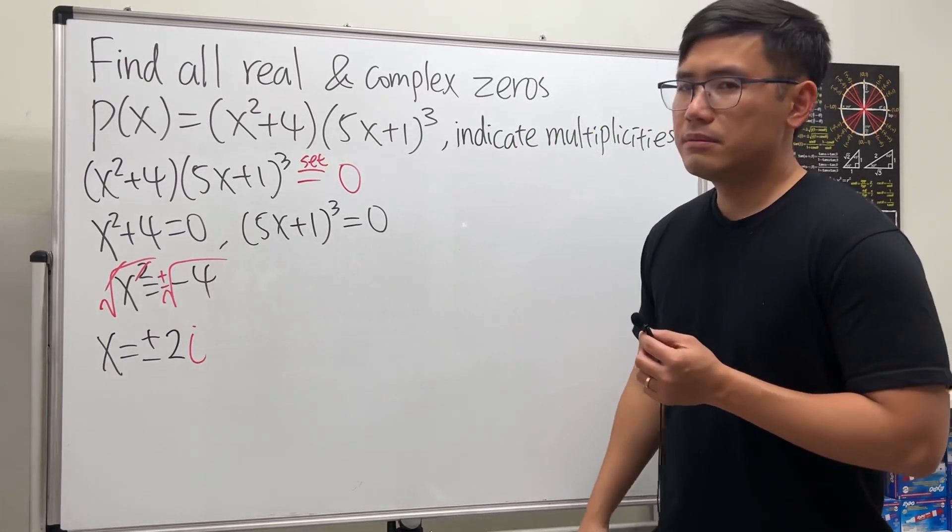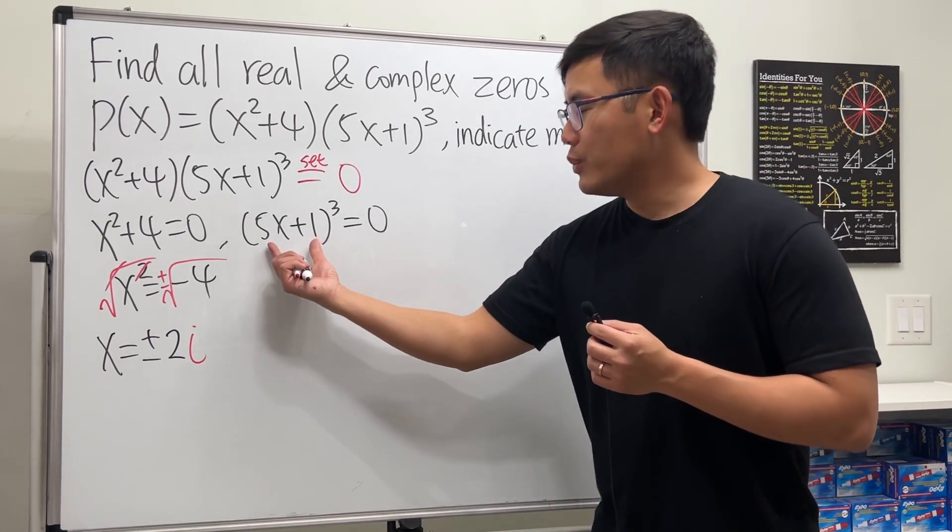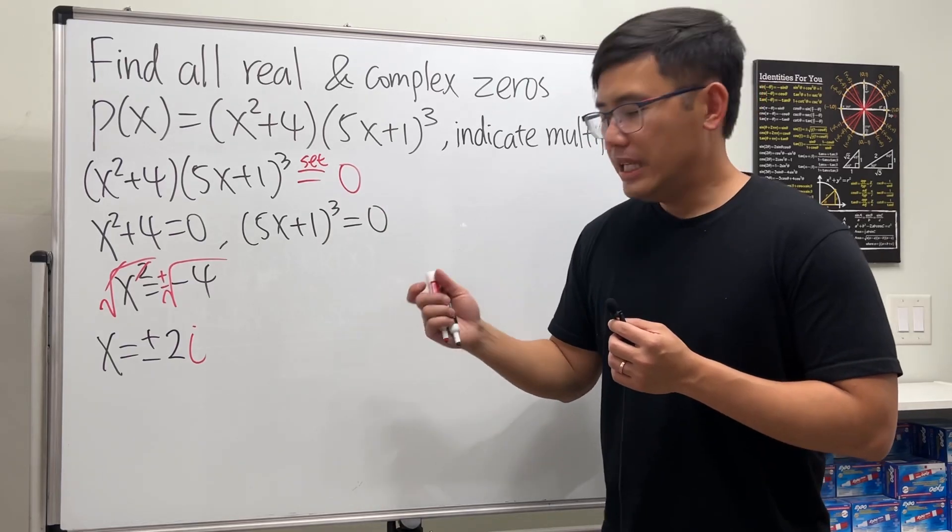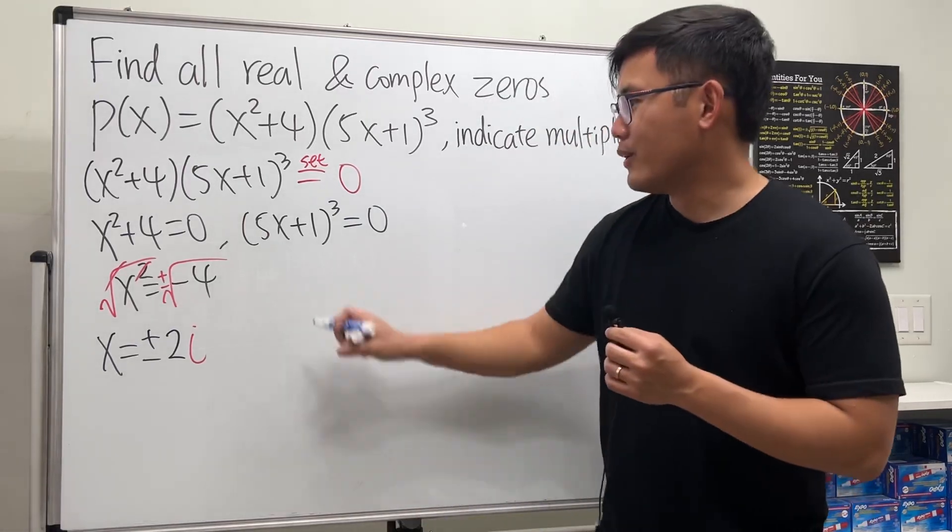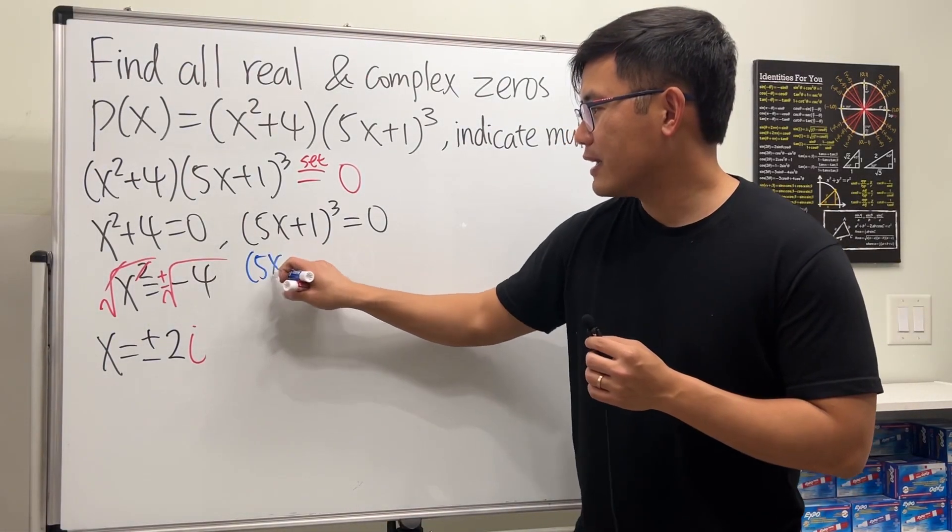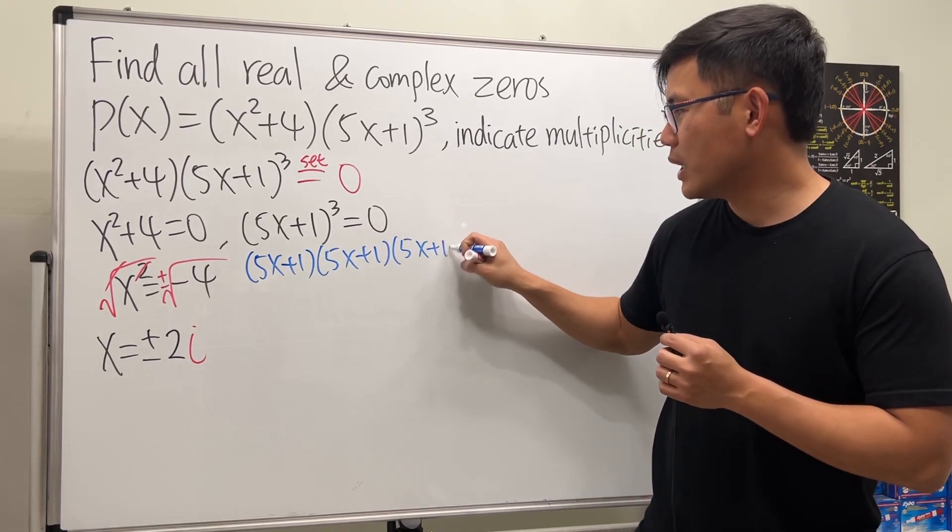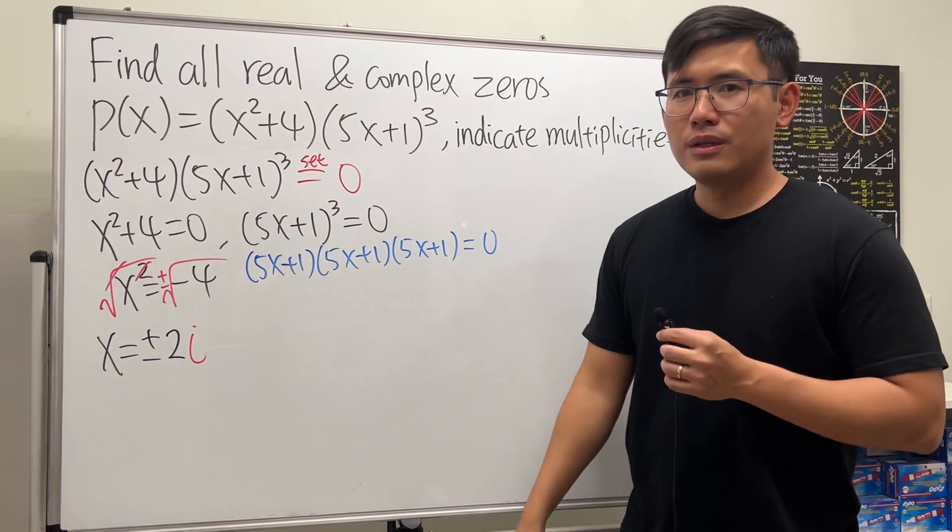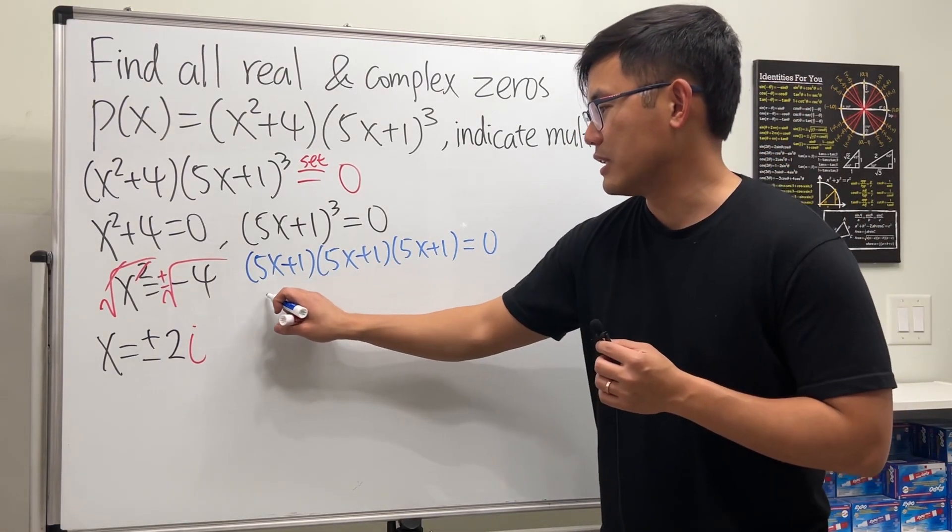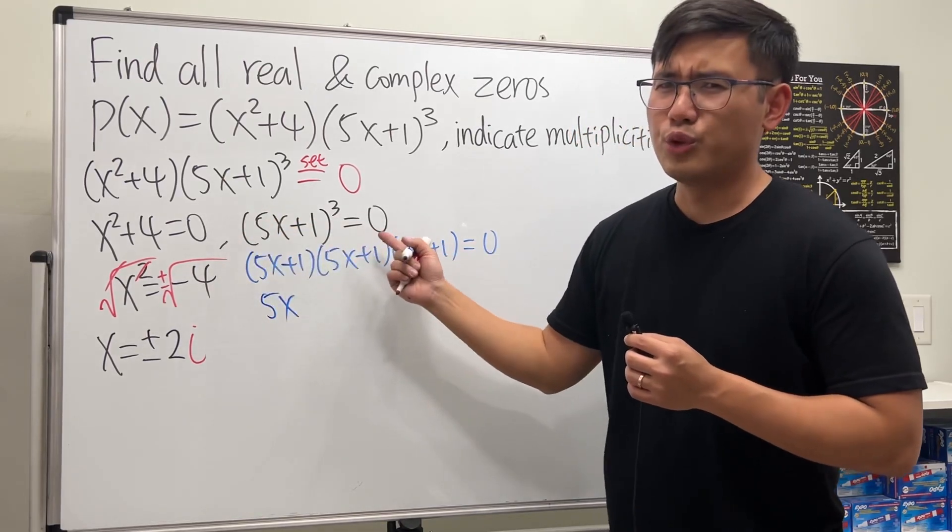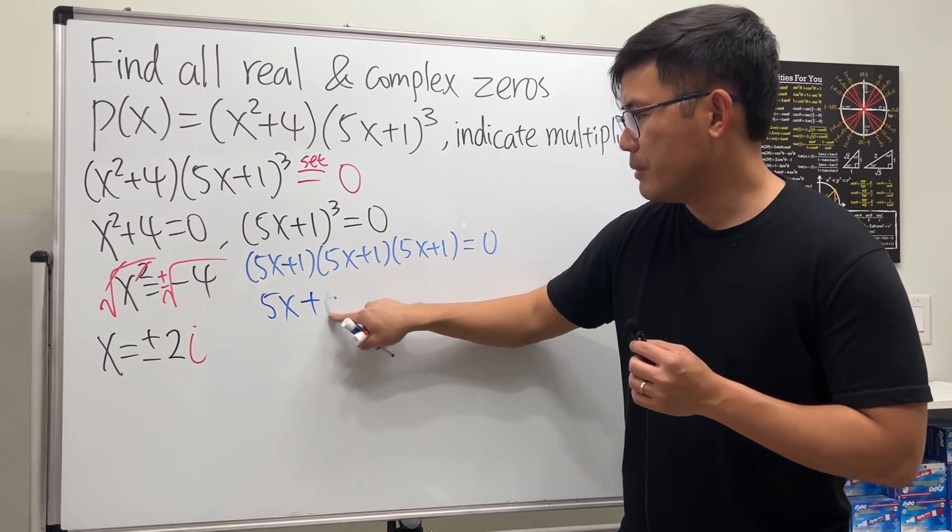Now for this, it's a little bit strange because what's happening here is that when we have this to the third power, it really means—what it really means (I dropped my marker)—it means that we have (5x+1)(5x+1)(5x+1) equals zero. And of course we can just put one of them to be zero because everything else is the same, right? Or you can just take the cube root. We can just look at the inside, put it down here: 5x+1, and we make that equal to zero.